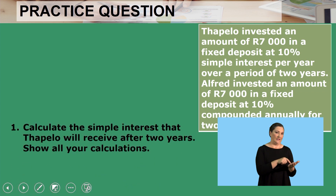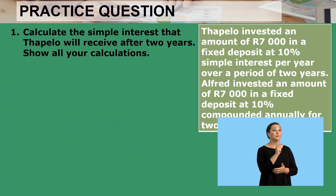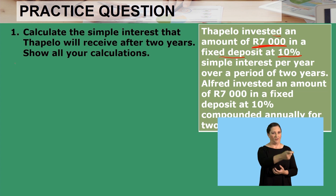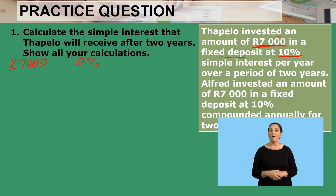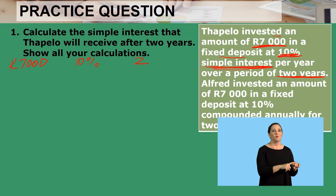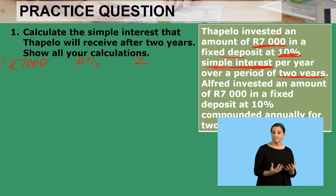Let's start with calculating simple interest for TAPELO. TAPELO invested 7,000 in a fixed deposit at 10%. So we need to take the most important information: the principal amount is 7,000, the interest is 10%, and the period is two years. TAPELO has invested using simple interest, so the method we'll use is simple interest.